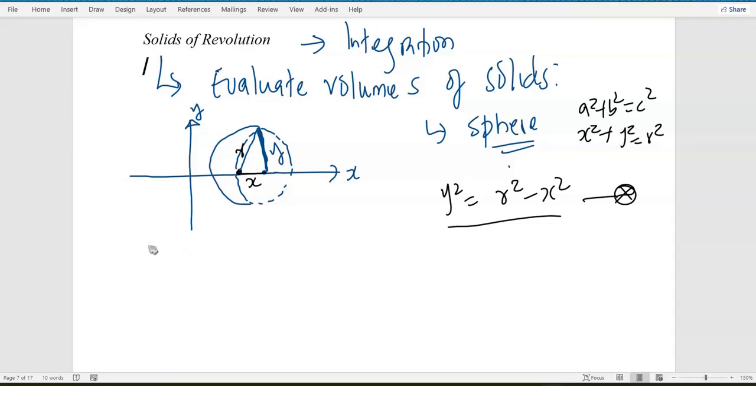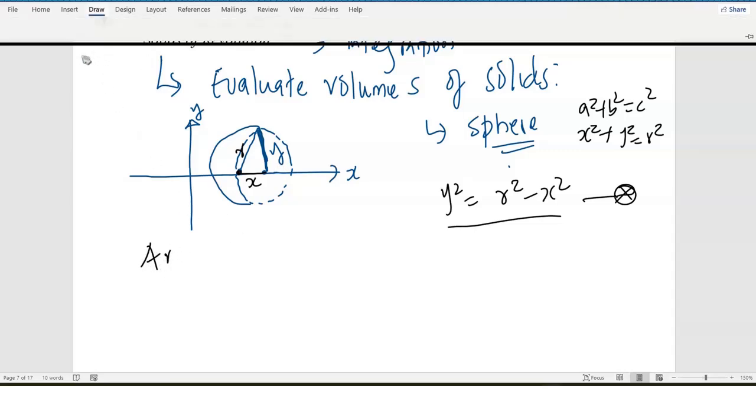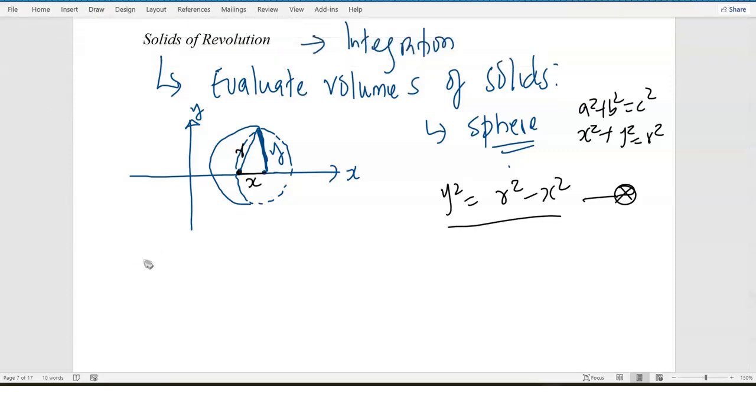Now, we know that volume can be area times, wherever you are, if you're talking about volume of a cylinder, it can be the cross-section area times the height. As long as you have the cross-section area, you can always get the volume. So, in most cases, volume comes from area. So, if I integrate area, I always get volume.